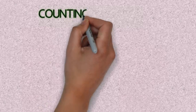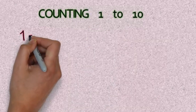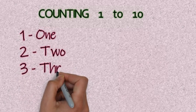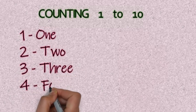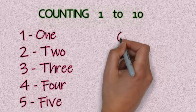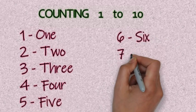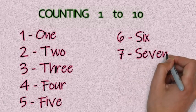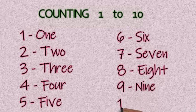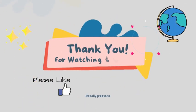Counting 1 to 10. O-N-E one, T-W-O two, T-H-R-E-E three, F-O-U-R four, F-I-V-E five, S-I-X six, S-E-V-E-N seven, E-I-G-H-T eight, N-I-N-E nine, T-E-N ten.